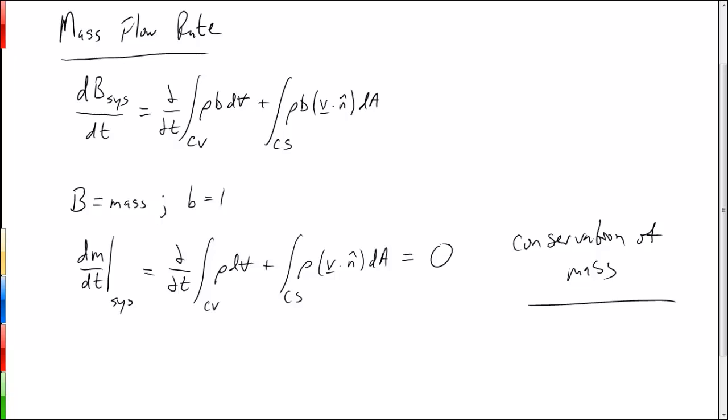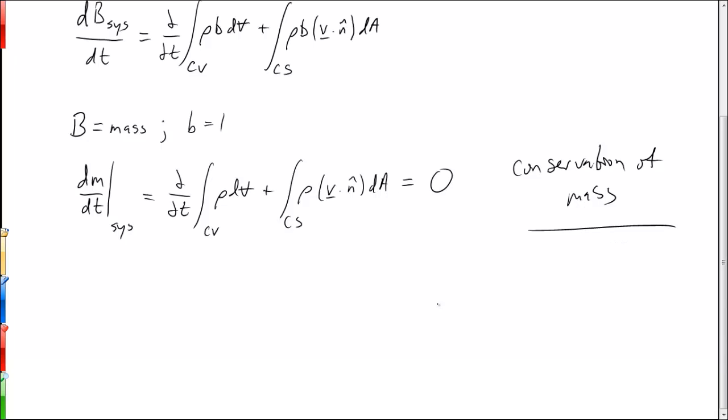Now let's look at the second part of this equation, the part where we're looking at the integral over the control surface. If you remember, we've talked about if we have a uniform flow with a uniform density and uniform velocity, we can write the mass flow over an area as equal to the density times that area times the velocity of the fluid crossing that area.